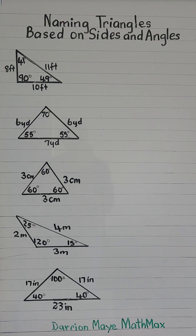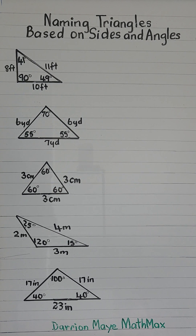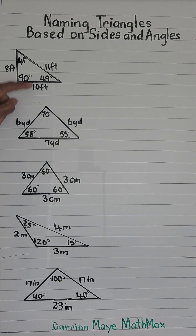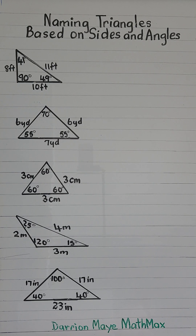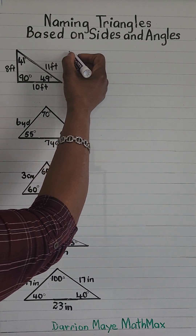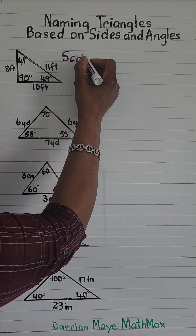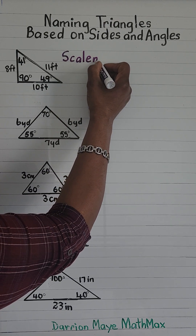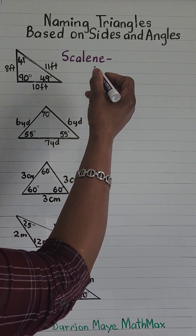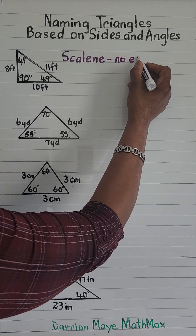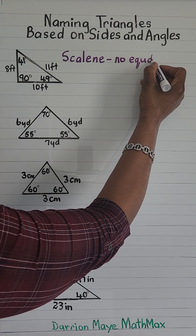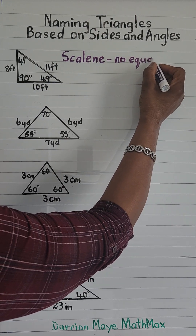Welcome to naming triangles based on sides and angles, fifth grade math. Let's start with sides. Our first triangle has 8 feet, 10 feet, and 11 feet — no equal sides. A triangle with no equal sides is called a scalene triangle.